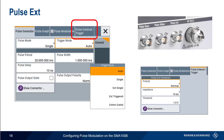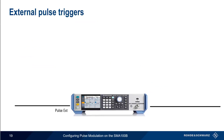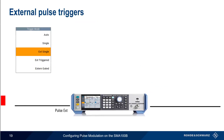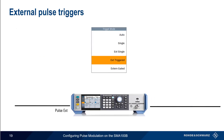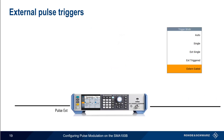Let's look at how these external triggers work. In External Single mode, each received trigger causes a single pulse to be sent. In External Triggered mode, pulses are sent continuously after a single trigger signal is received. And in External Gated mode, pulses are sent as long as the External Gate signal is present.